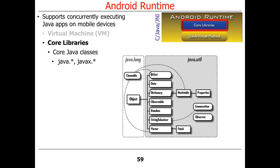Where we left off last time, we talked about the Java virtual machine and how Android had a couple of different virtual machines: something called Dalvik, and then something called ART for the Android runtime. Irrespective of whether you have ART or the Dalvik virtual machine, there are a number of Java class libraries that come along for the ride. Most of the Java libraries you know from vanilla Java programming are also available to you on Android.